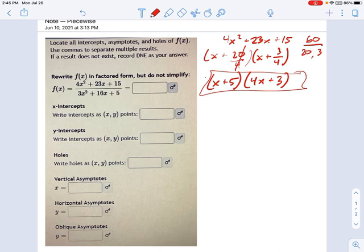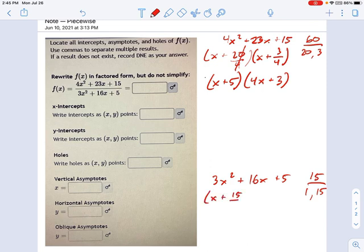Now, next part, we need to factor the denominator. 3x squared plus 16x plus 5. 3 times 5 is 15. Factors of 15 which add up to 16, that's just 1 and 15. That one's kind of easy. So we have x plus 15 over 3, and x plus 1 over 3, which simplifies out to x plus 5 and 3x plus 1. That's the factored form.